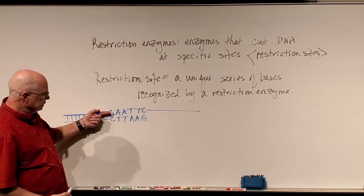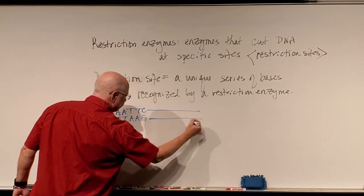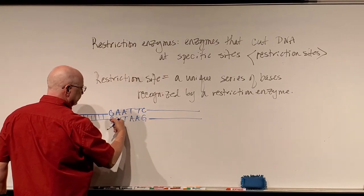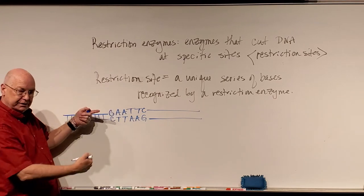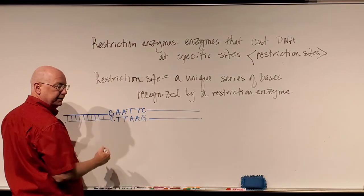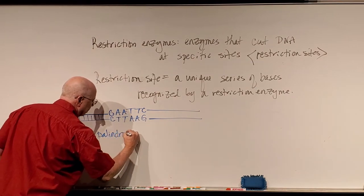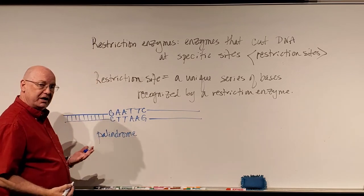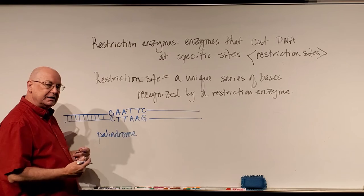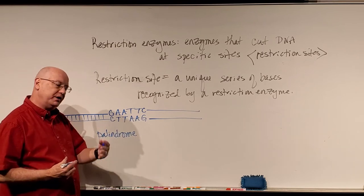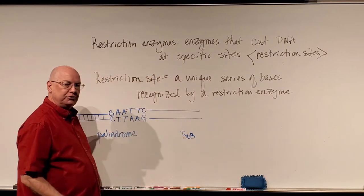If I look at this carefully — G, A, A, T, T, C on one strand, reading one direction, and C, T, T, A, A, G on the other — they read the exact opposite. They read the same forward and backward on either strand. We call this a palindrome. My first name is a palindrome — the name Bob reads B-O-B one way, B-O-B the other. Hannah is also a palindrome: H-A-N-N-A-H either way.